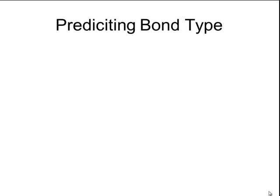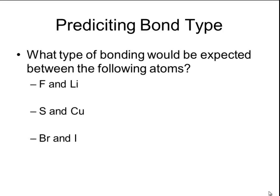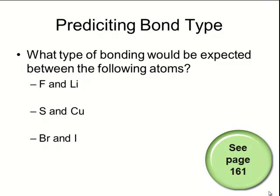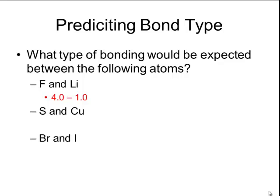It's very easy to predict what type of chemical bond will form between atoms — all you need to do is subtract the electronegativities of each atom. For example, what type of bonding would be expected between fluorine and lithium? Fluorine has an electronegativity of 4.0 — the highest on the periodic table — and lithium has an electronegativity of 1.0. The difference is 3.0, which is higher than 1.7, so that falls into the range of an ionic bond.